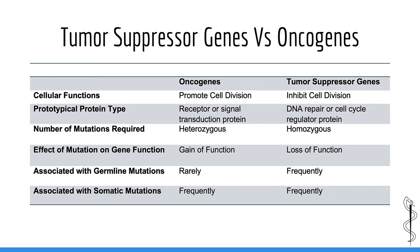Unlike tumor suppressors, most oncogenes only need a single mutation in a single copy of a gene to promote carcinogenesis — in other words, heterozygous mutations. Oncogenes typically require gain of function mutations, while tumor suppressors typically need loss of function mutations. Oncogenes are rarely associated with germline mutations, whereas tumor suppressors are frequently associated with germline mutations — this is why familial cancer syndromes are most often due to tumor suppressor gene mutations. Both tumor suppressors and oncogenes are associated with somatic mutations, since most cancers are sporadic.